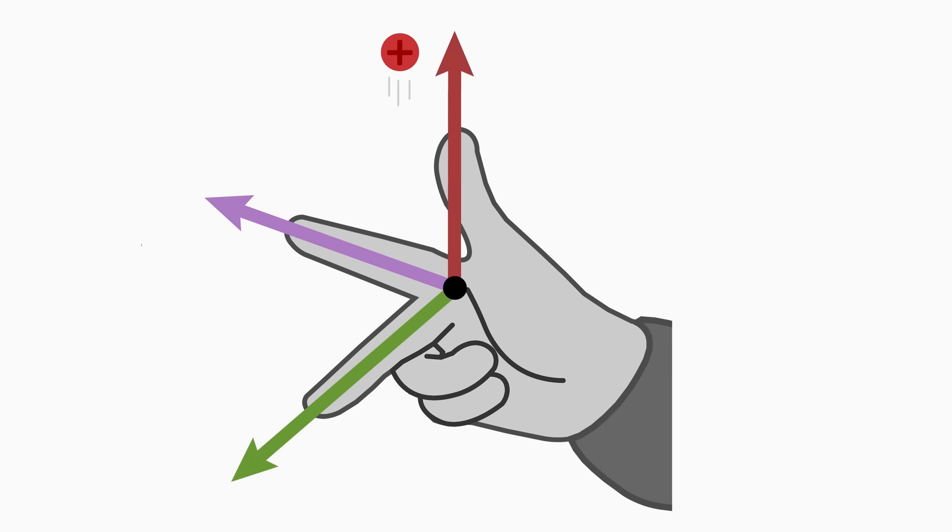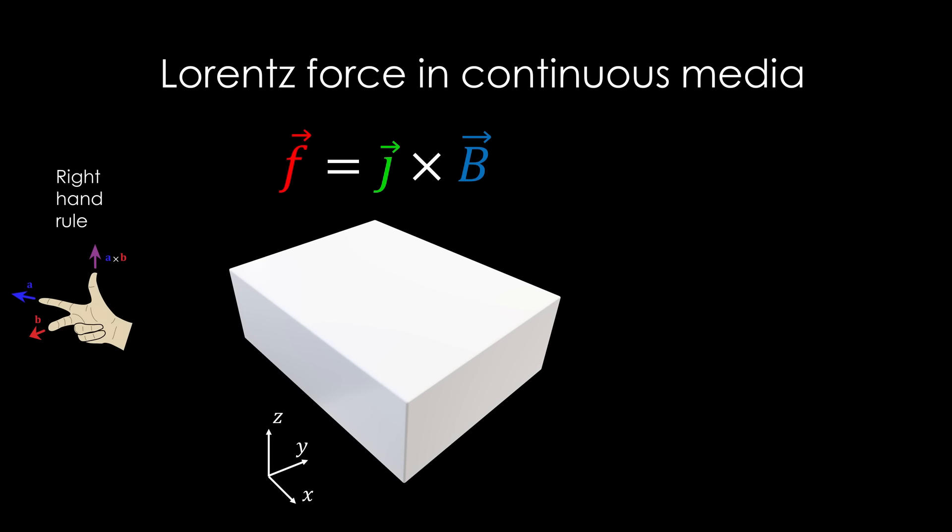To understand this, we have to look at how MHD thrusters even work. These drives utilize the Lorentz force, and this is basically a push that magnetic and electric fields give to moving charges. You can design the drive with the direction of the magnetic force using the right-hand rule. And this is calculated using a current density and a magnetic flux density.